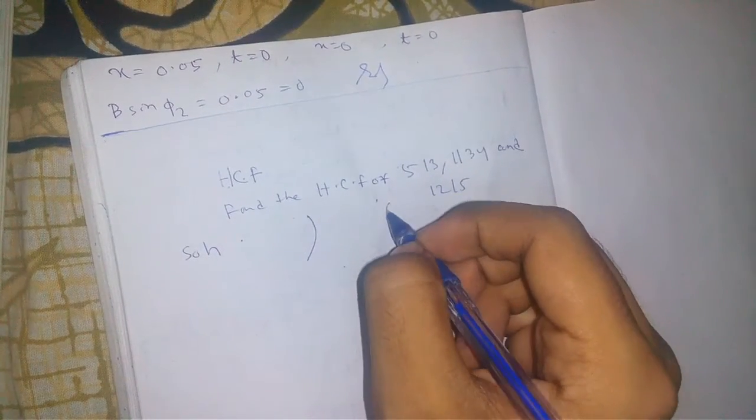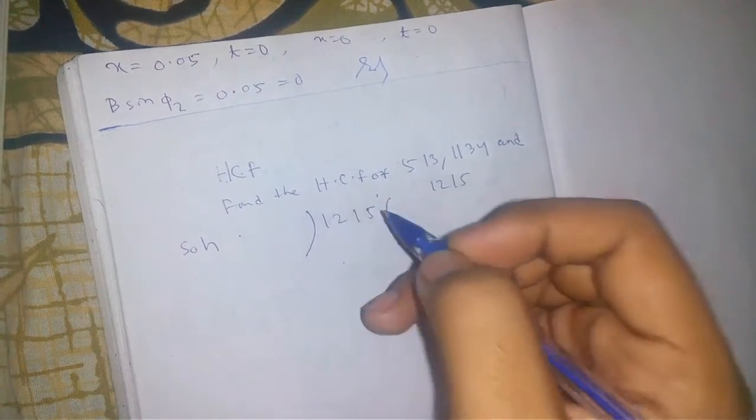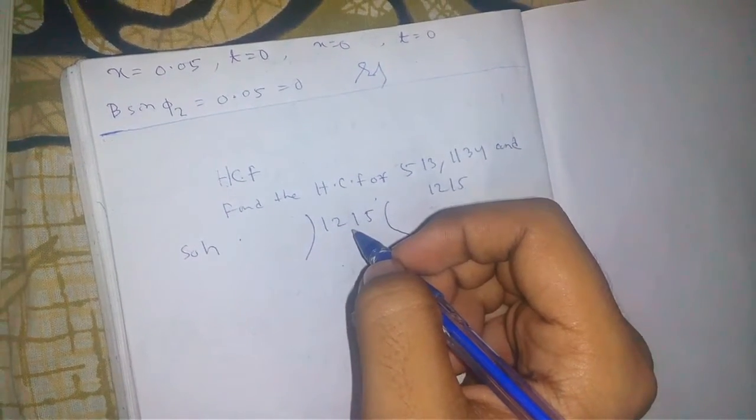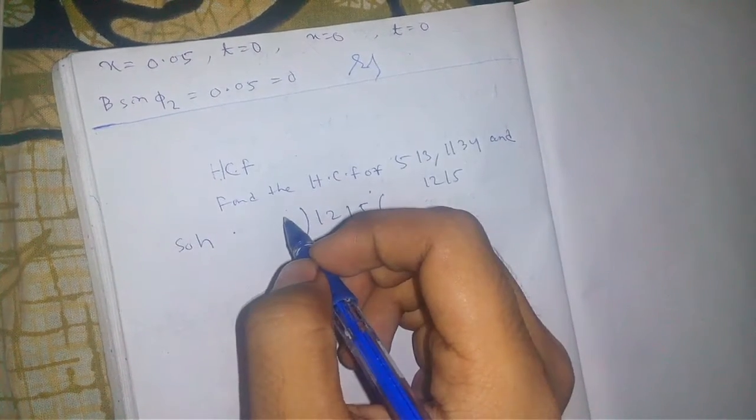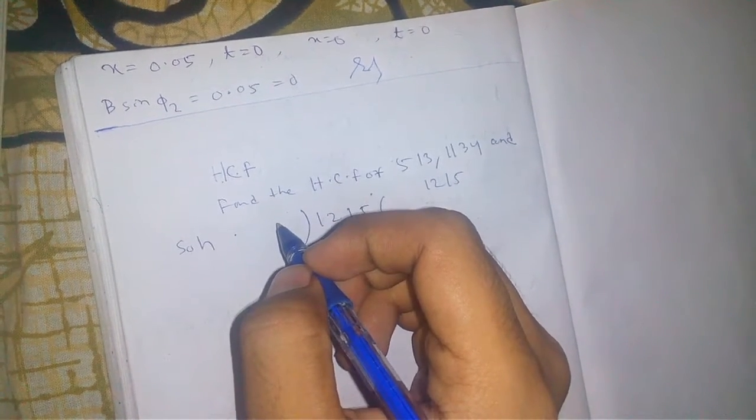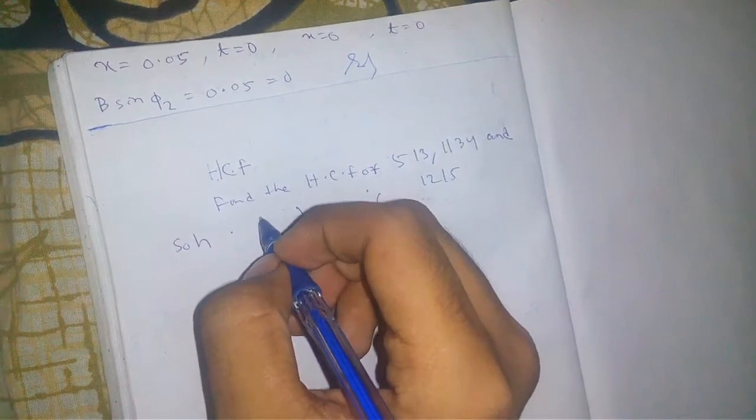First, we have to divide 1215, the largest number of these three, by the next smaller number, which is 1134.